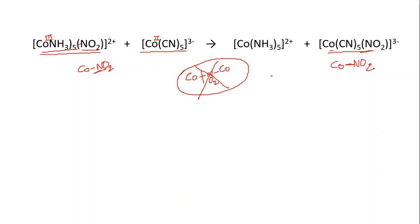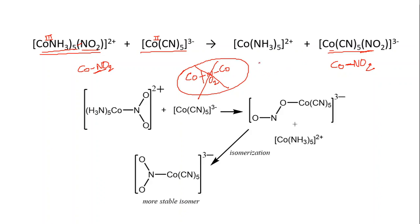What's happening is a remote attack is happening. And it initially forms this product in which the nitro group is attached through the oxygen, then it isomerizes to give you the N-connected nitro complex, that is the nitrito kappa-N complex.